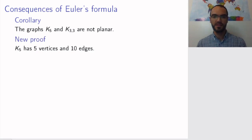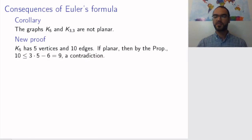So let's start with K5. It has 5 vertices and 10 edges. If it were planar, then by the proposition, we would have that the number of edges is smaller than or equal to 3 times the number of vertices minus 6. But putting in numbers, this gives us that 10 is smaller than or equal to 9, which is obviously false. So K5 cannot be planar.